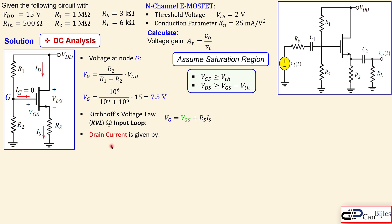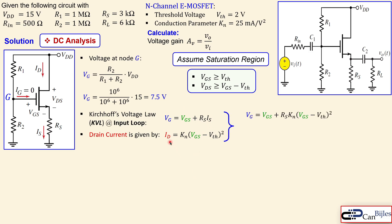The drain current in the saturation region is given by the square-law formula using conduction parameter KN and the threshold voltage. Since ID and IS are exactly equal to each other, we can substitute the ID expression into the KVL equation. Substituting all known values — KN, RS, VDD, and the threshold — the only unknown is VGS.